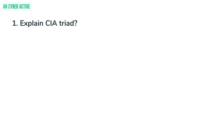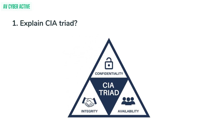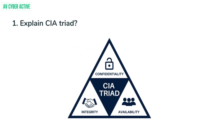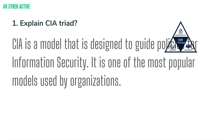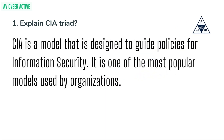Question 1: Explain the CIA Triad. CIA stands for Confidentiality, Integrity, and Availability. It is a model that is designed to guide policies for information security, and it is one of the most popular models used by organizations.